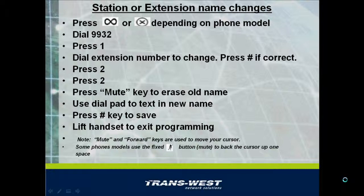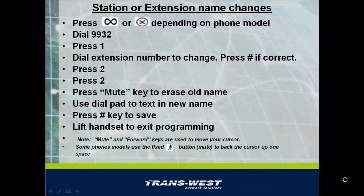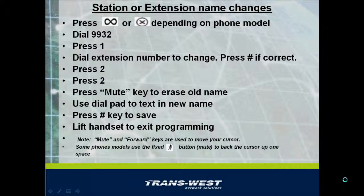Press the mute key to begin erasing the name now showing within your LCD screen. On some phones the mute key is in your vertical row of programmable keys; on others it's a hard key with an icon that looks like an old-style desk microphone with a slash through it. Once the old name is erased, use your dial pad to text in the new name you wish the extension to display, using the mute key to back the cursor up. If your phone has a forward key, usually found within your vertical row of keys, you may use it to advance the cursor. Press the pound key to save the new name, then lift and replace your handset to exit programming. Congratulations — that's all there is to a station name change.